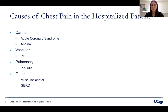Other life-threatening causes of chest pain — such as aortic dissection, tamponade, and pneumothorax — can all occur in the right hospitalized patient. Generally, they have some predisposing condition or have undergone a procedure that could trigger that.